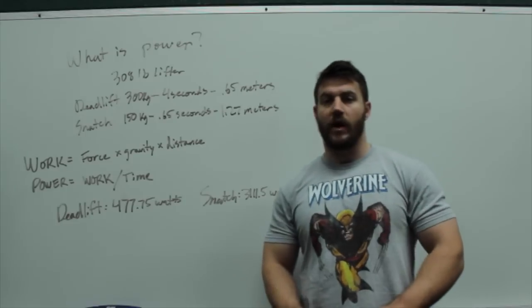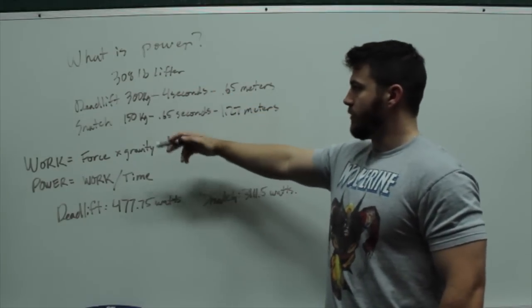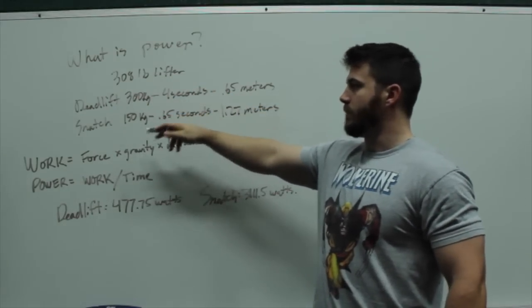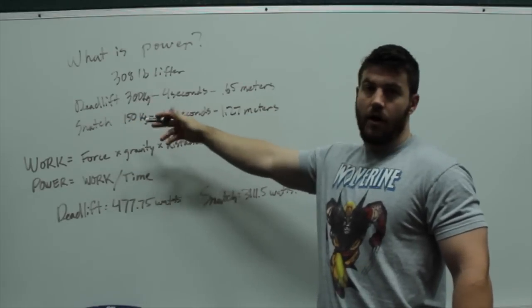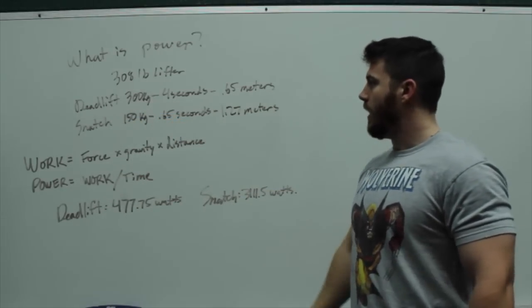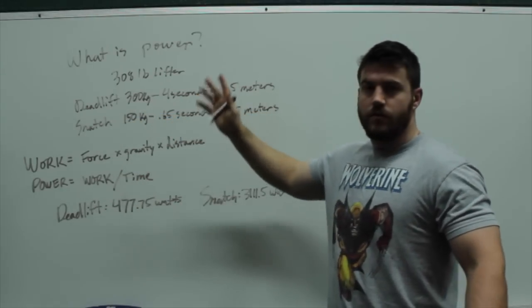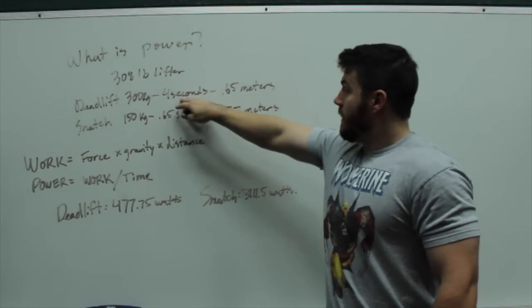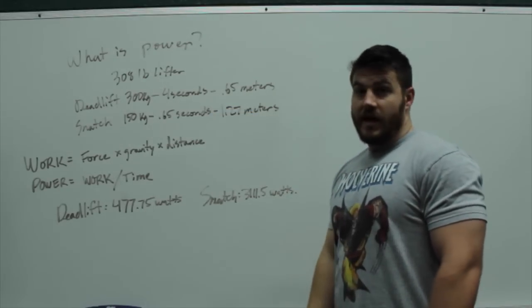Here's an example of what I mean. Take a 308 pound lifter who can deadlift 300 kilograms and who can snatch half that, 150 kilograms. These are just random numbers to give you a point. It takes four seconds for them to finish that deadlift.